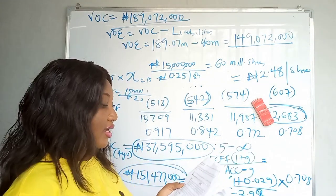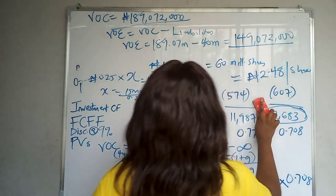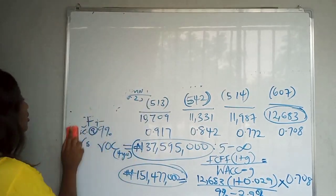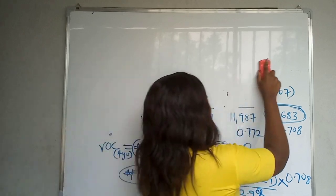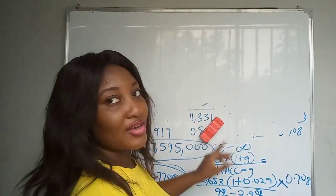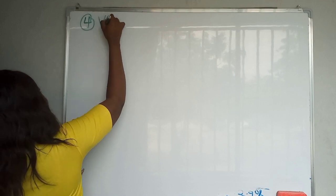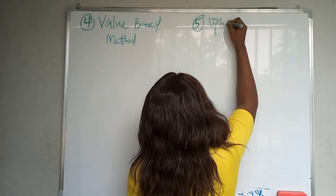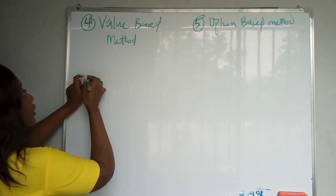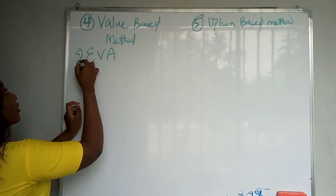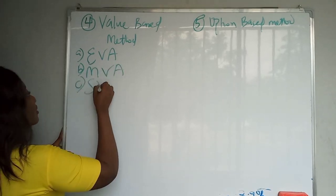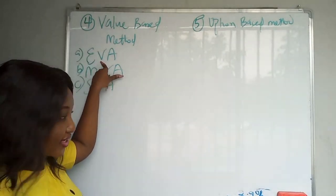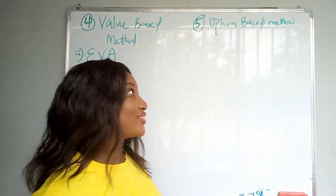That's the market value of each share in Layman Co. Now let's move to the value-based method and option-based method. The fourth method is the value-based method, and the fifth is the option-based method. Under the value-based method there are three sub-methods: Economic Value Added (EVA), Market Value Added (MVA), and Shareholders Value Added (SVA).